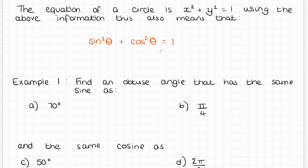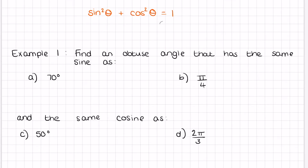Across our quadrants, there are values that have the same x and y values. For example, find an obtuse angle that has the same sine as 70 degrees. An obtuse angle is between 90 and 180. For sine, two angles have the same sine if the angles add up to 180 degrees or π radians. So sin(70°) equals sin(180° − 70°).